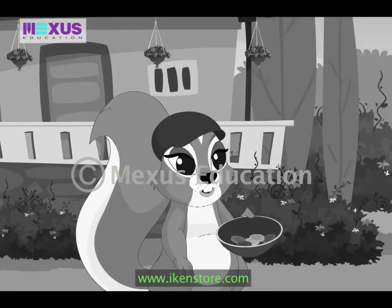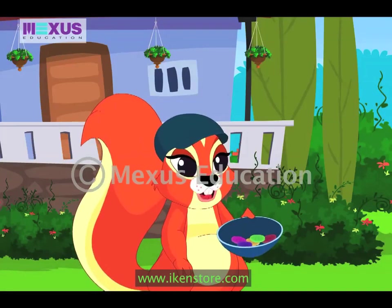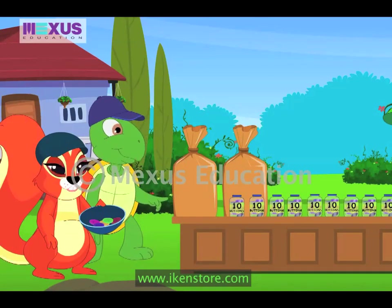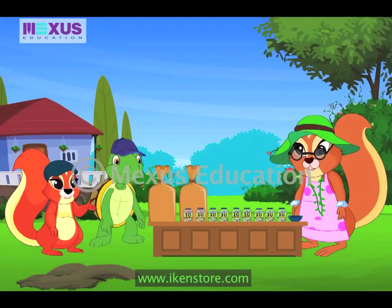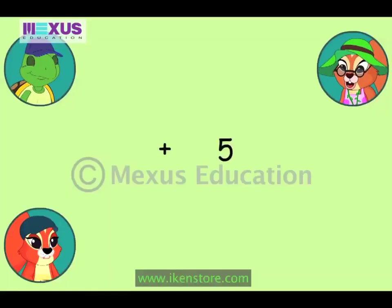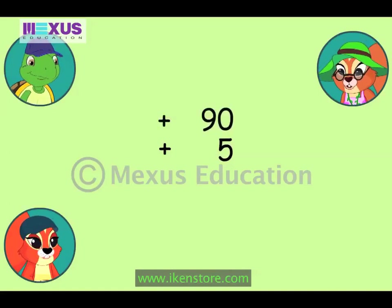So, let's see. There are five buttons in the bowl. There are nine jars. And there are two sacks having ten jars each. This is going to be a tough one, Mom. Let me help you. So, there are five loose buttons, nine jars which make ninety buttons, and two sacks.